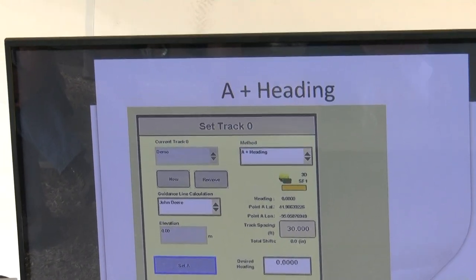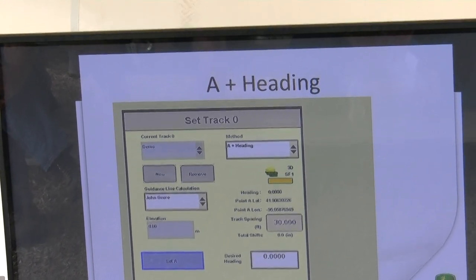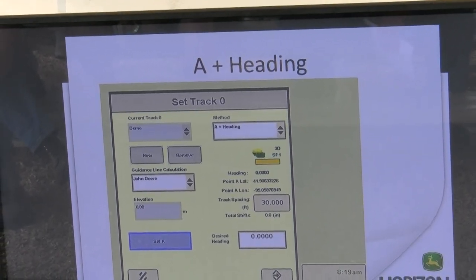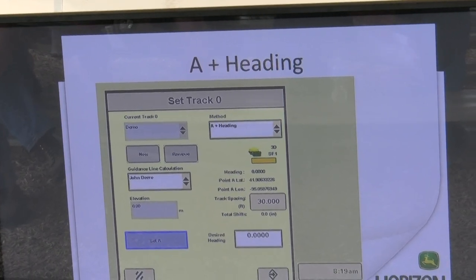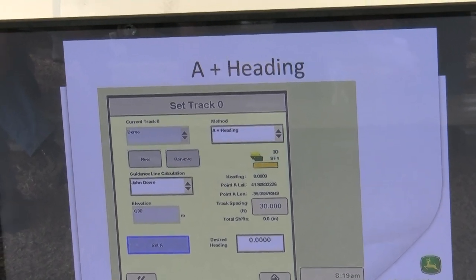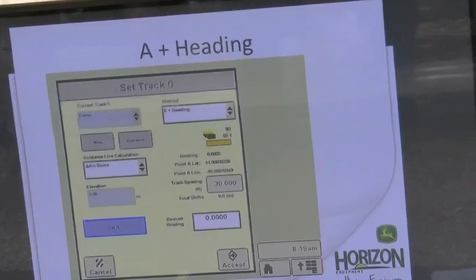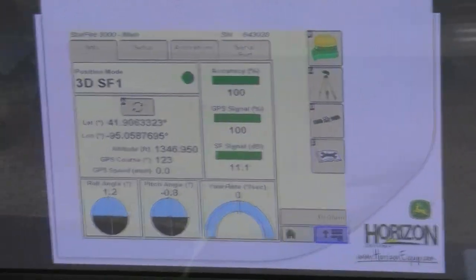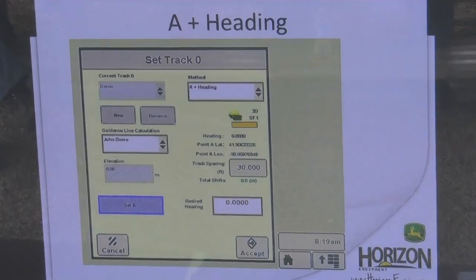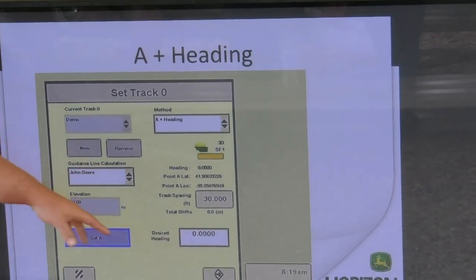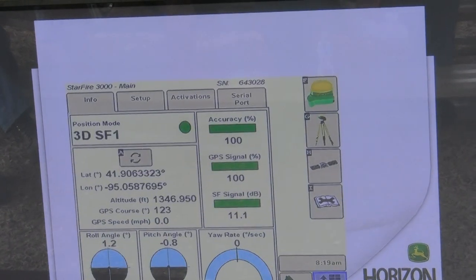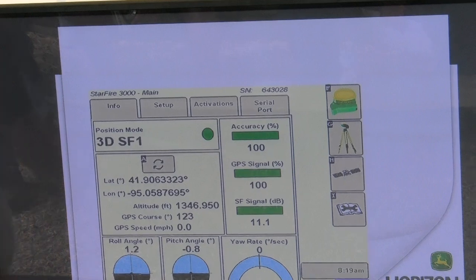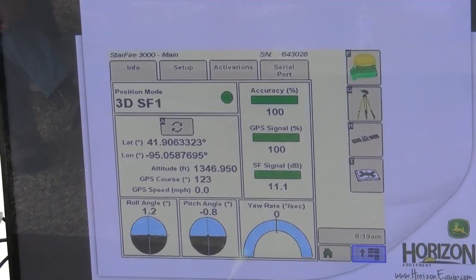First, we're going to start with A plus heading. A great thing about this one, we can make a guidance line without even driving. Pull in the field, pick something on the other side at the direction you want and point the nose directly at that. Who knows where to find the heading on our receiver page? If we come to our receiver page, we look at our GPS course - that's the heading we are facing. We come in here, put our heading in from our GPS page, hit set A, accept, line made. We didn't move an inch.